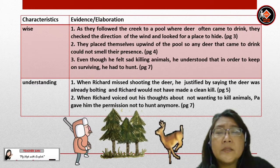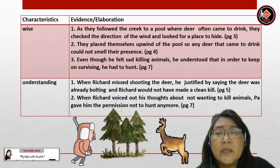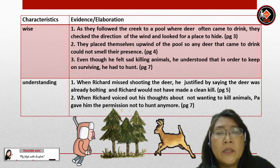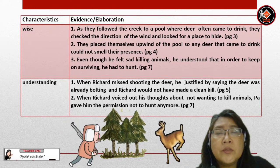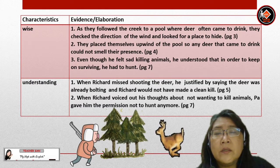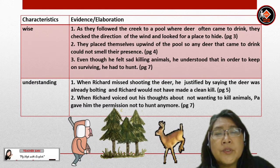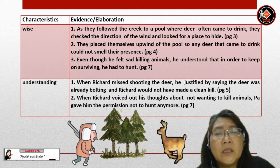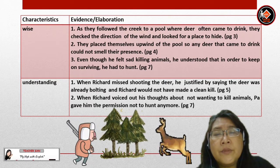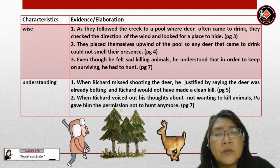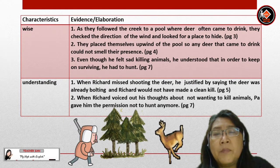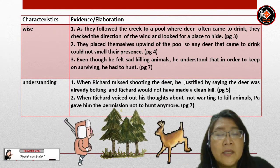Pa is also understanding. Evidence: when Richard missed shooting the deer, he justified it by saying the deer was already bolting and Richard would not have made a clean kill. When Richard voiced out his thoughts about not wanting to kill animals, Pa gave him permission not to hunt anymore.